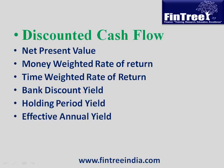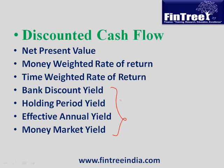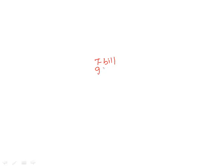Next: four separate yields — bank discount, holding period, effective annual, and money market yields. These can be remembered using the analogy of mistakes. Example: a T-bill purchased for 960 with a face value of 1000 and maturity of 180 days. Holding period yield is the benefit of 40 on an investment of 960, which equals 4.16%.